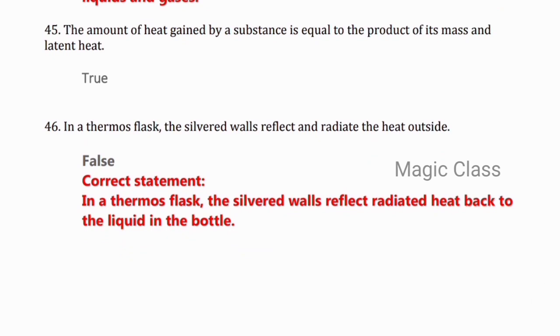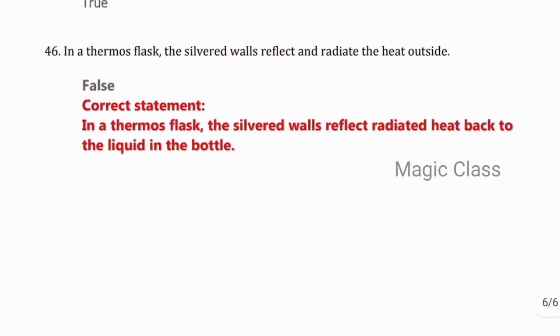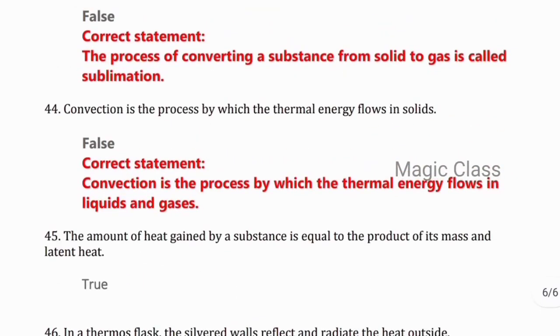Question 46: In a thermos flask, the silvered walls reflect and radiate the heat outside. False, because in a thermos flask, the silvered walls reflect the radiated heat back to the liquid in the bottle and not outside. So with this, true or false for your 8th standard science quarterly exam is complete.